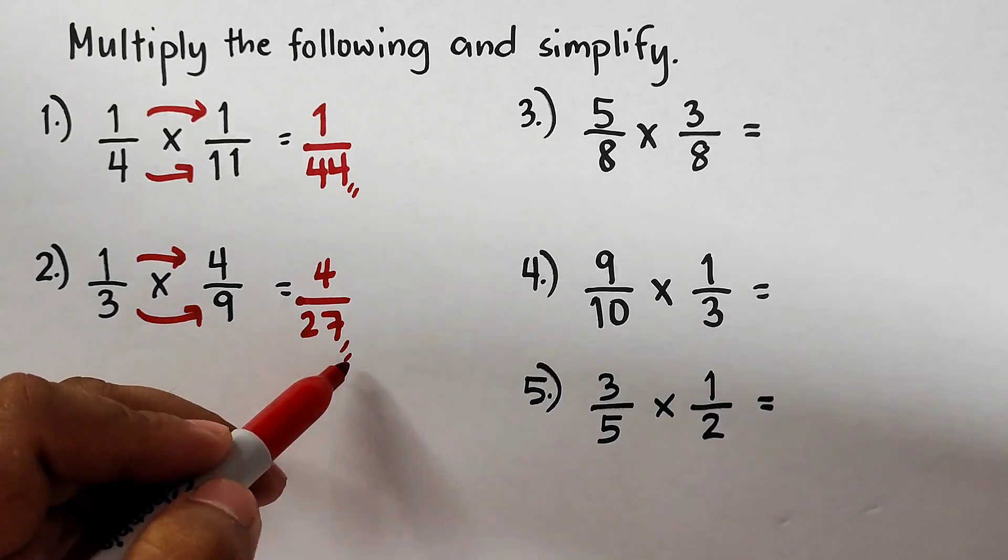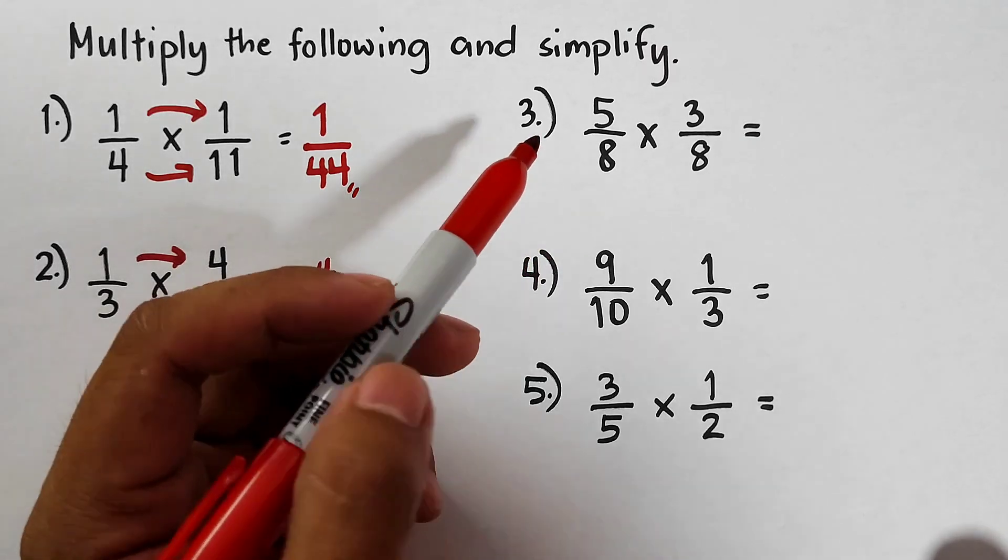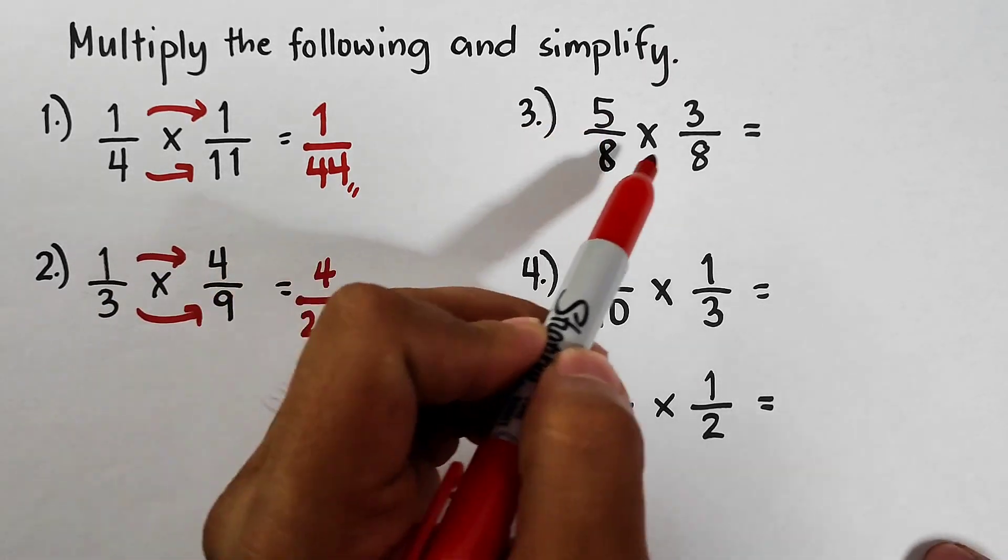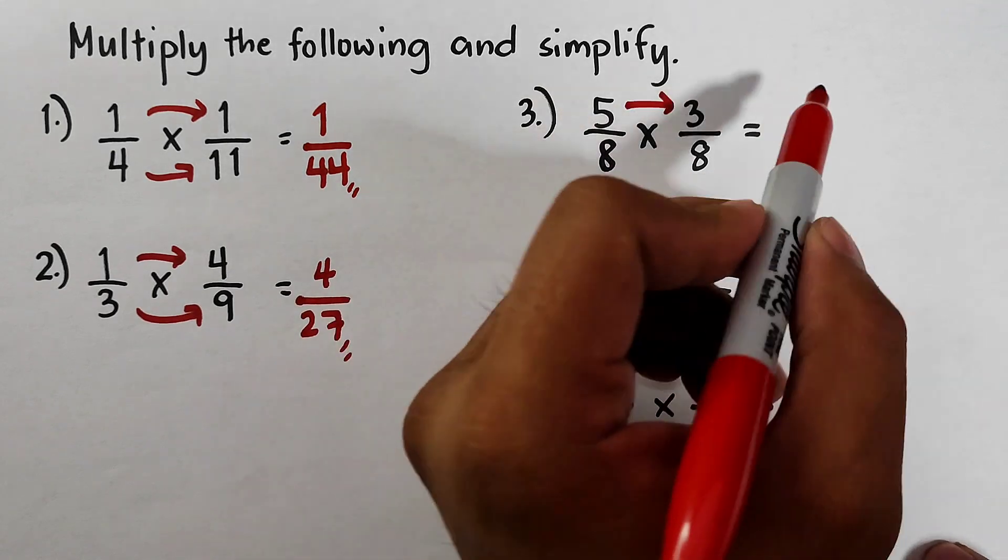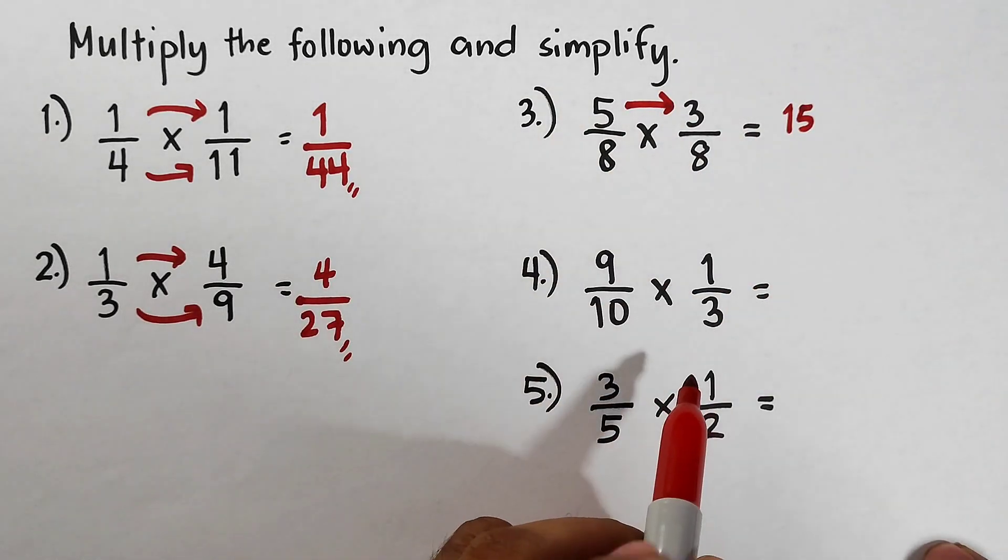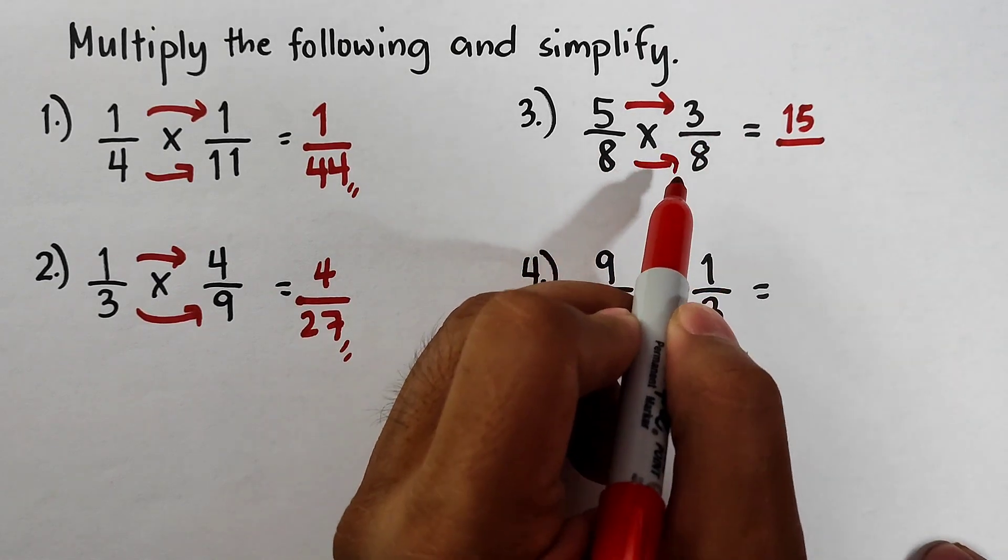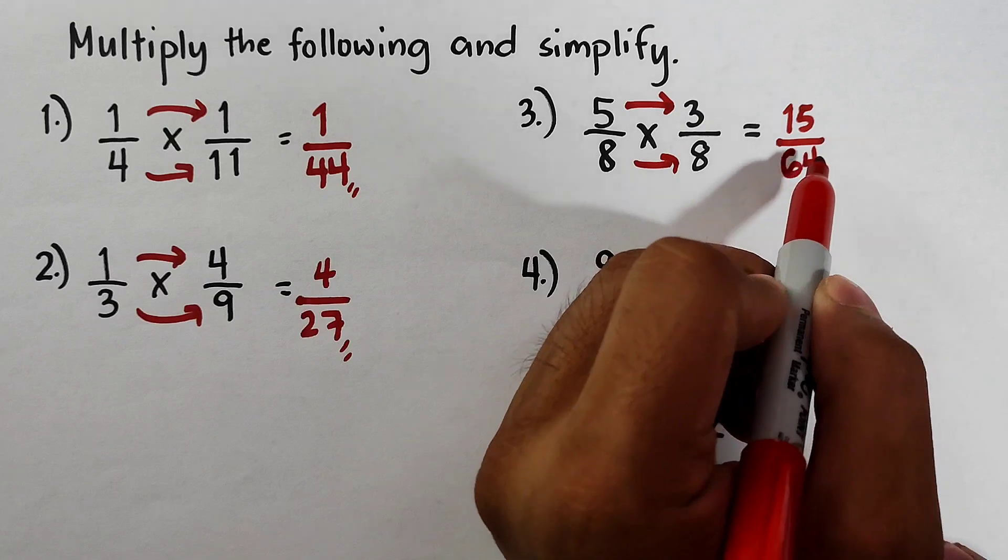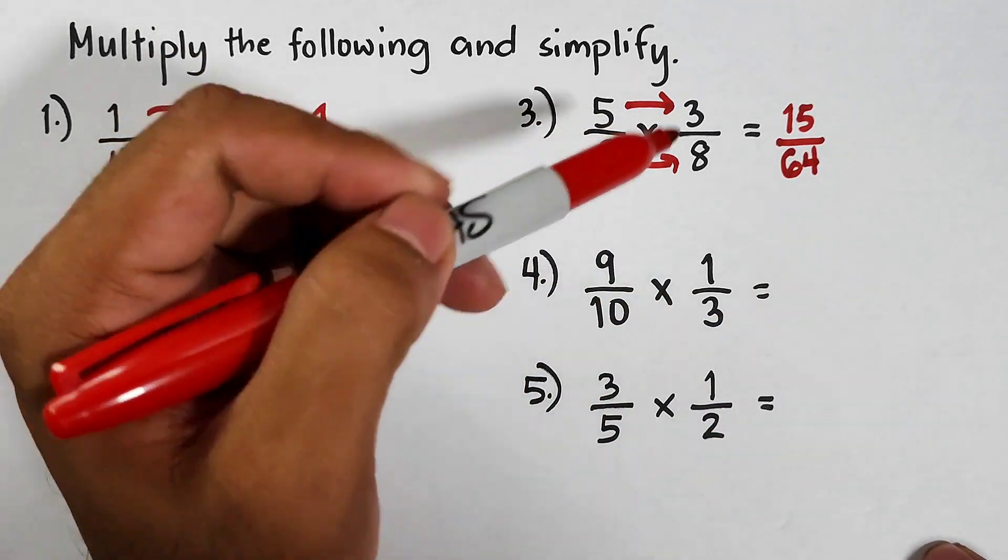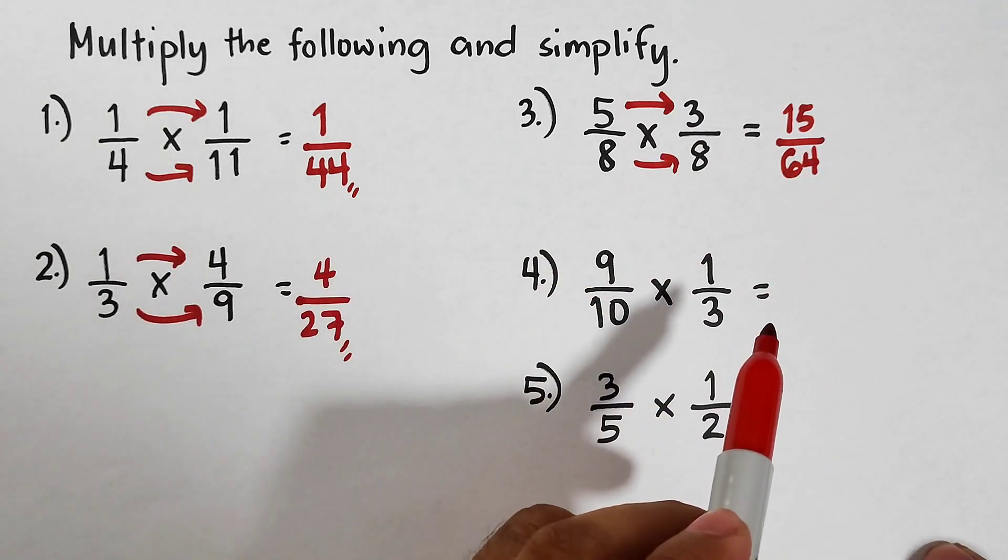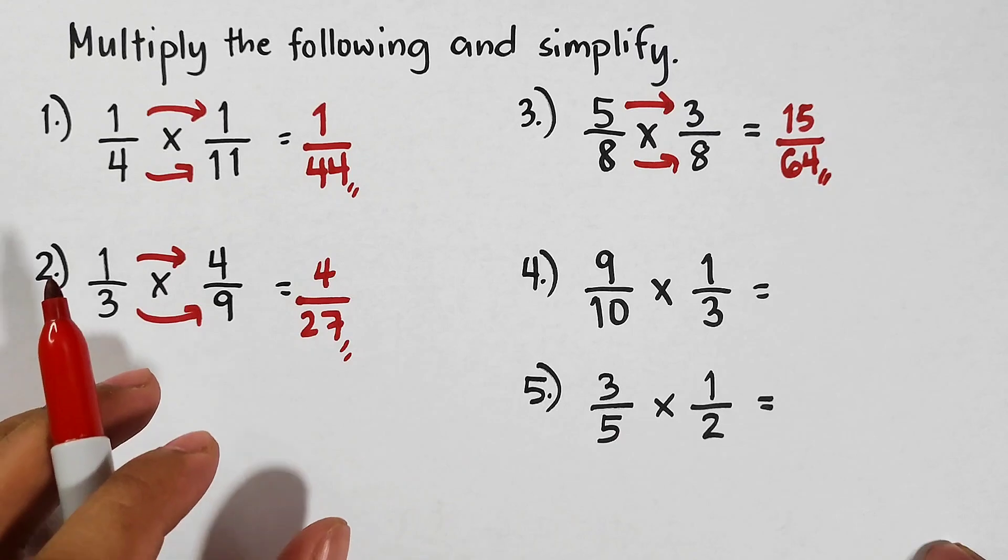Now let's continue with item number three. We have here 5/8 times 3/8. Multiply the numerators, this would be 15. Then for the denominator we have 8 times 8, the product is 64. As you can see, after multiplying these two fractions, the product that we have right now is 15/64 and this is already in simplest form. Now let's move on with item number four.